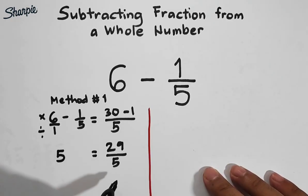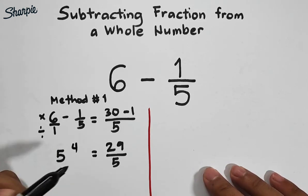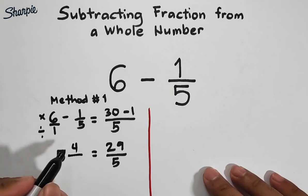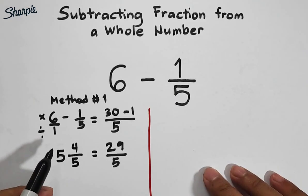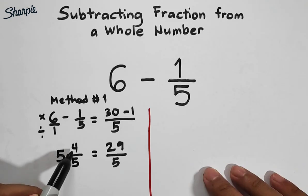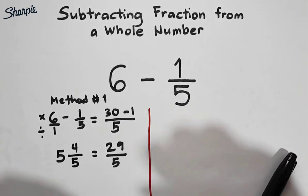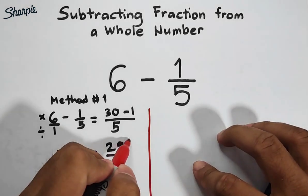Next, by dividing 29 by 5, we get 5 with a remainder of 4. That 4 is the new numerator over your original denominator, which is 5. So that gives you 5 and 4 over 5, which is also equal to 29 over 5. This is our final answer.